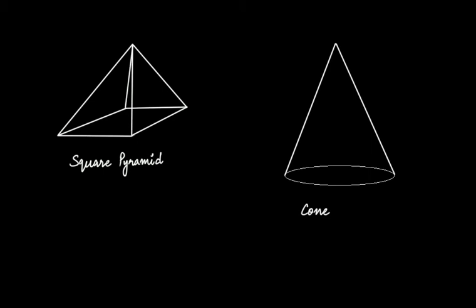How are cones and pyramids alike? So we have taken a cone here. This is the circular base and this is the lateral surface of this cone, and we have taken a pyramid.